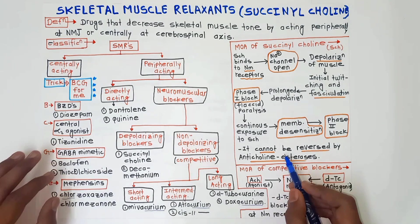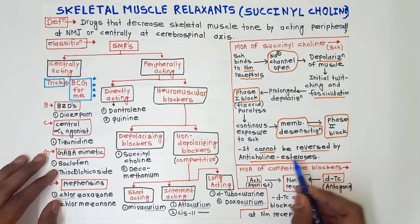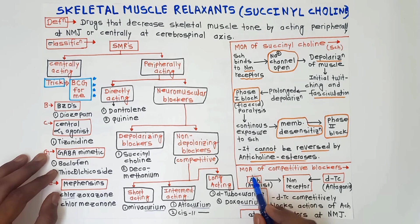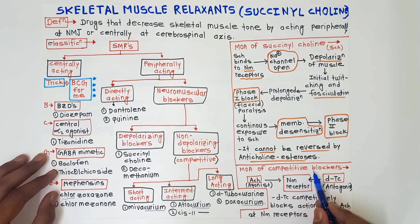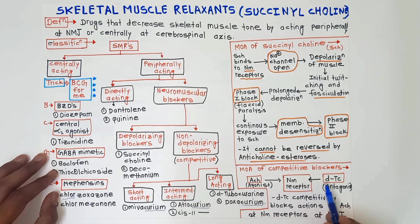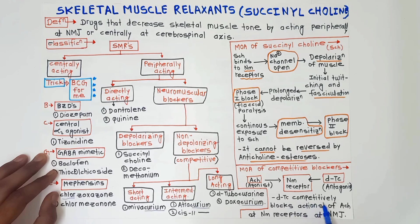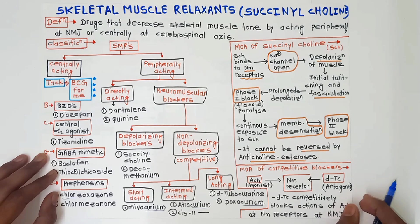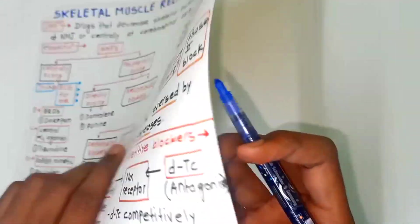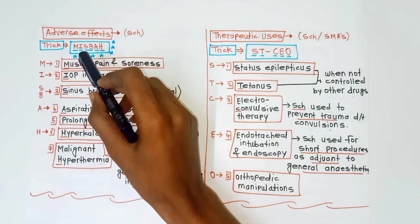Next, the mechanism of action of competitive blockers — that is, d-tubocurarine. D-tubocurarine acts as an antagonist while acetylcholine acts as an agonist at the NM receptors. D-tubocurarine competitively blocks the action of acetylcholine at NM receptors at the neuromuscular junction. Now we will look at adverse effects and therapeutic uses of succinylcholine.